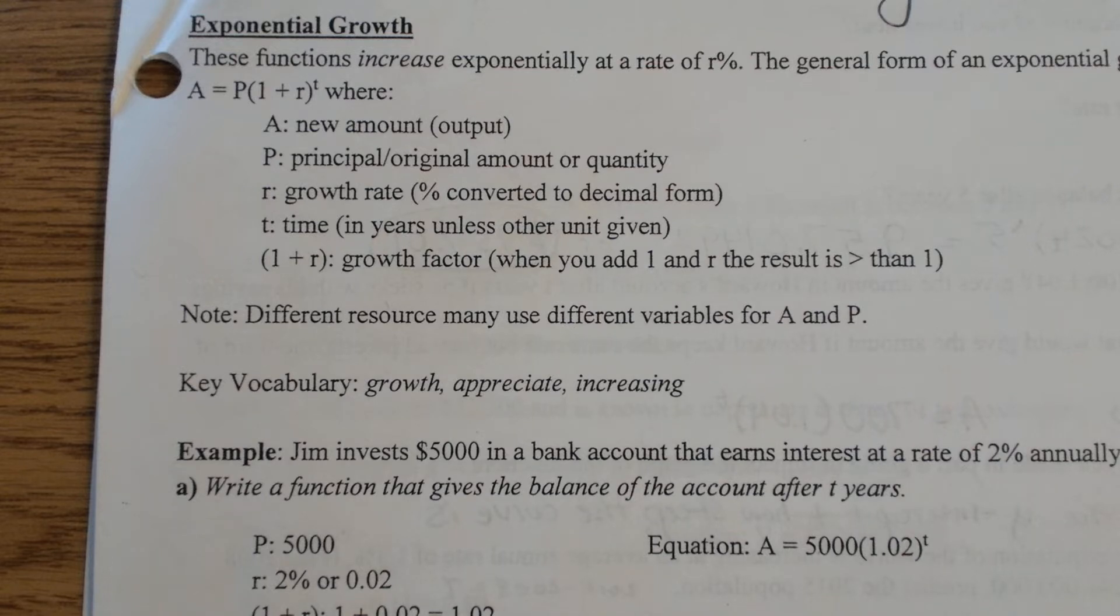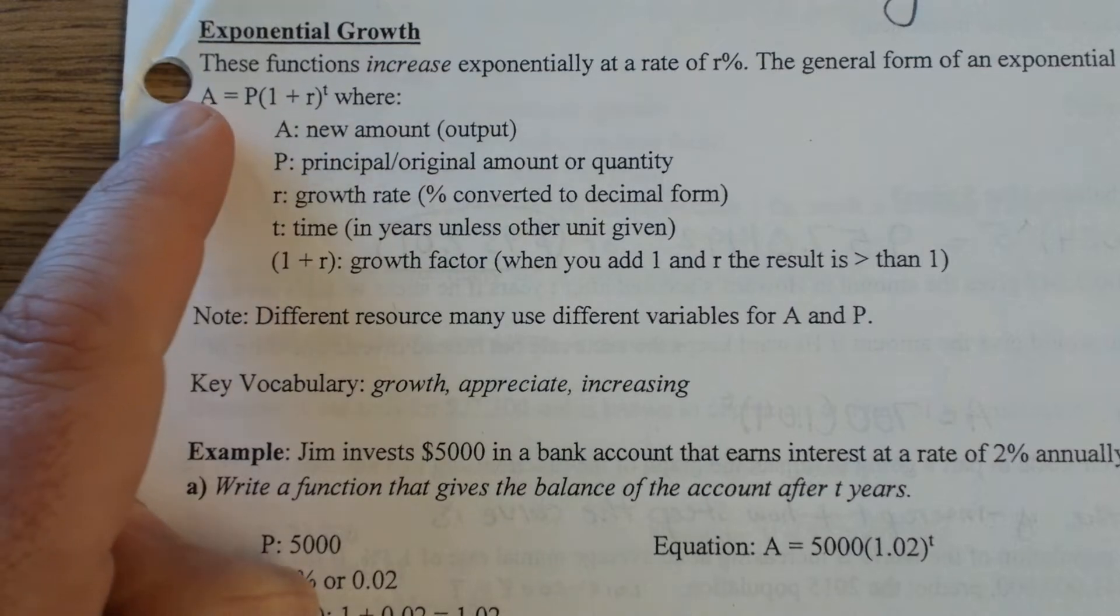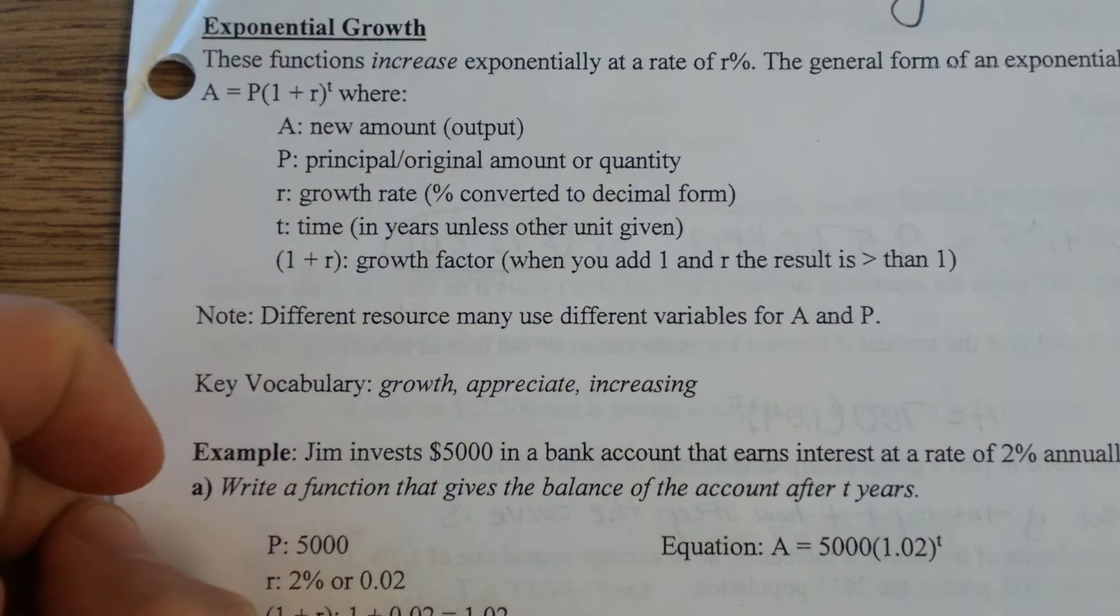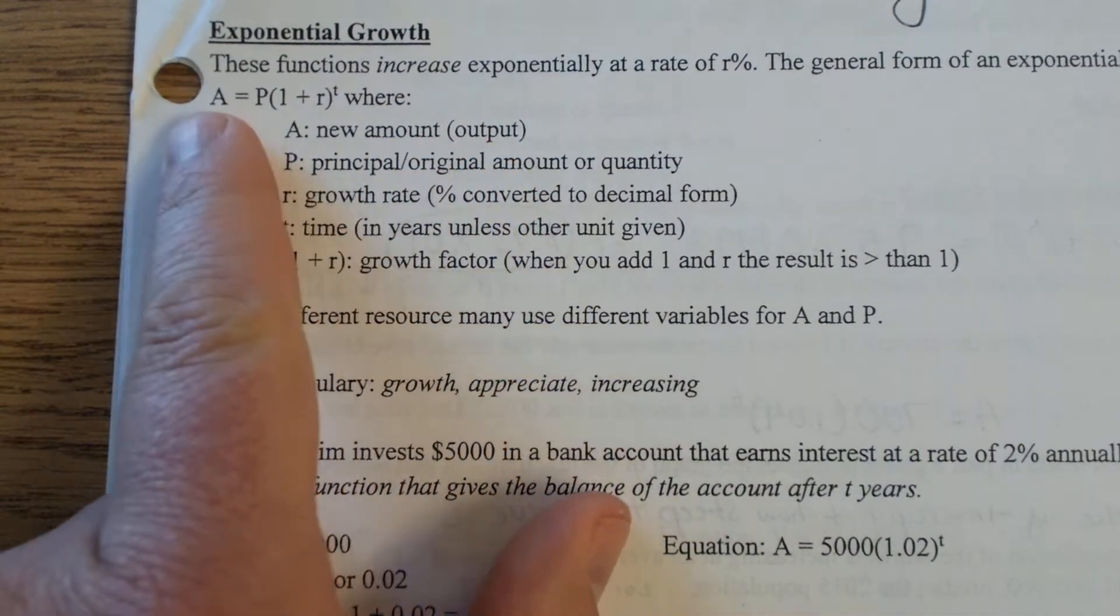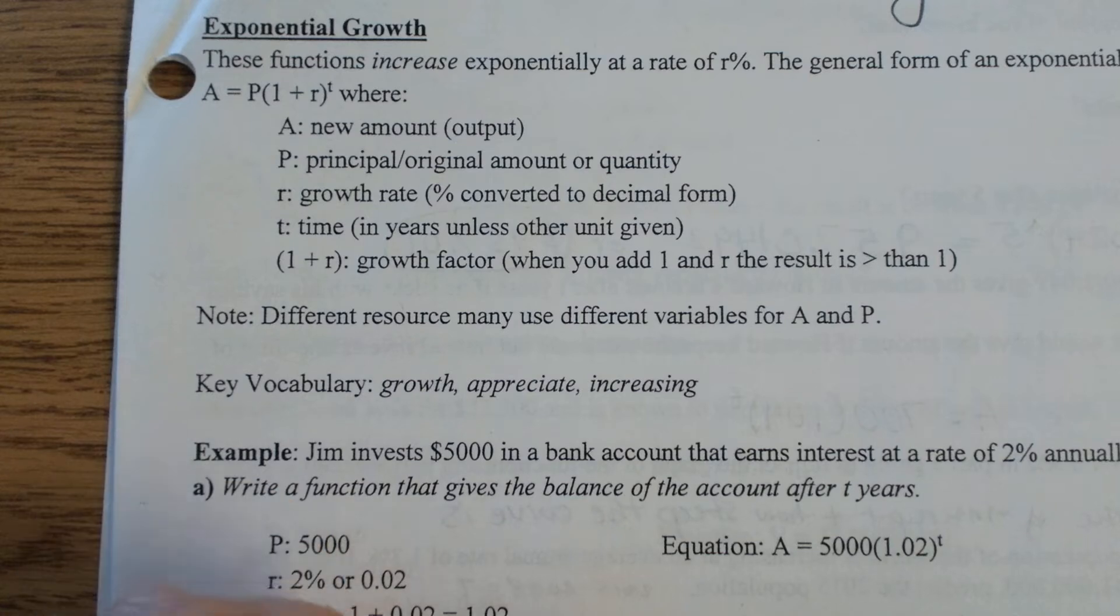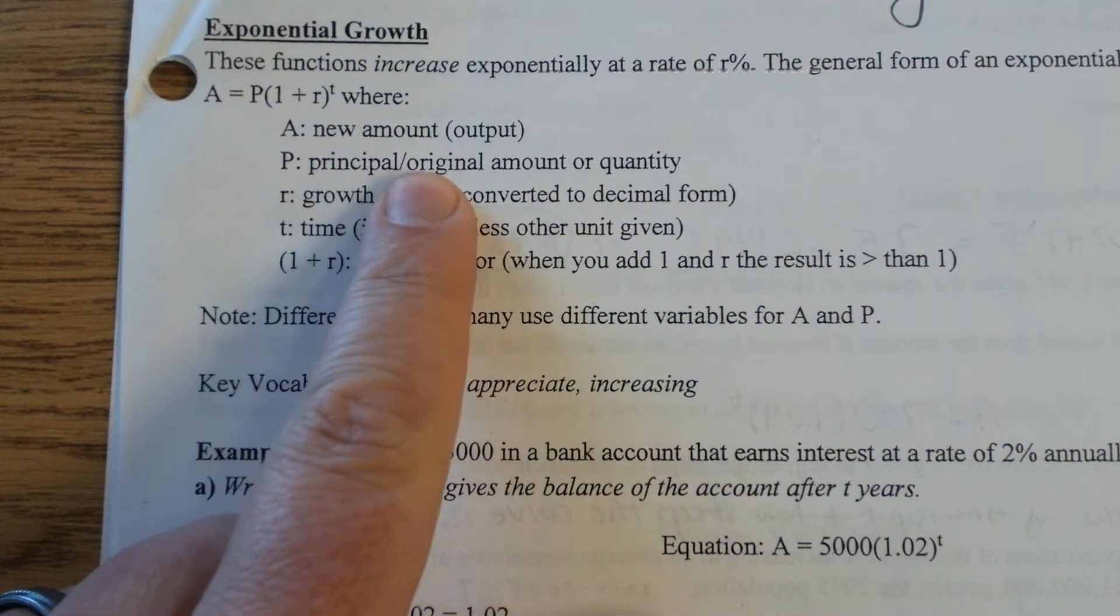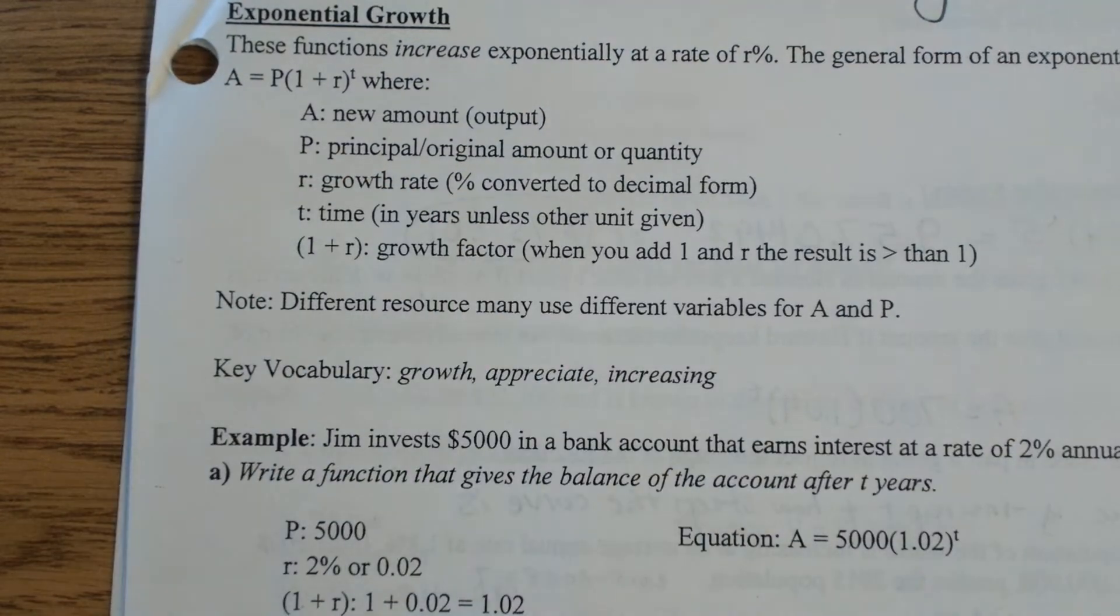So there's a general structure to a formula that goes along with exponential growth. The letters may be different from one textbook to the next, but this is the general structure and these are all the different components that go along with that structure. A is your output or your new amount at the end of all the process. The P in this equation is your initial amount, they call it the principal amount, especially when you're dealing with money.